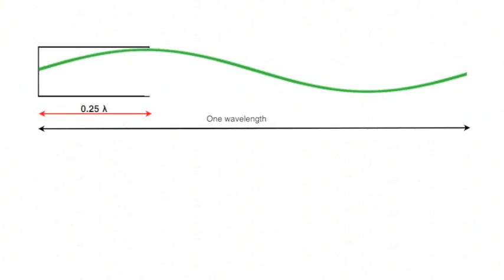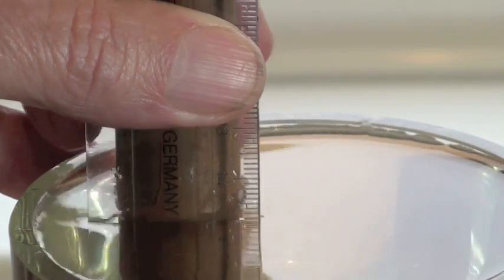Looking closely at the resonance points again, the length of the tube at resonance is around 155 millimeters.